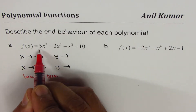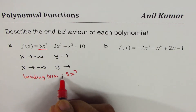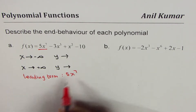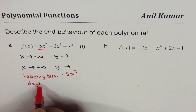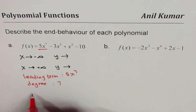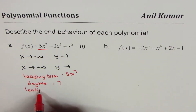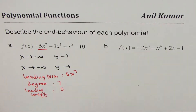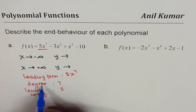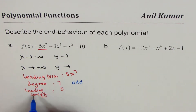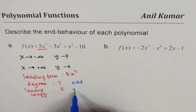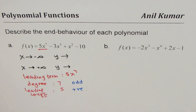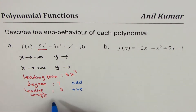In case A, 5x⁷ is the leading term. The degree is 7 and the leading coefficient is 5. Degree 7 means odd degree, and a leading coefficient of 5 means we're looking at a positive value. So if you are working with a polynomial with odd degree and positive leading coefficient, we can determine the end behavior from that.